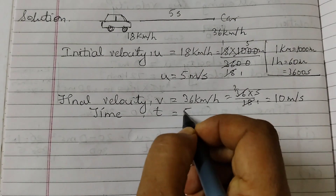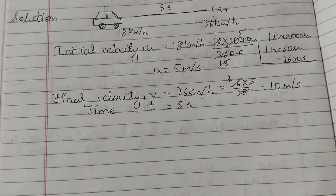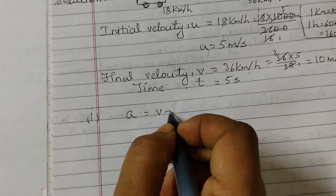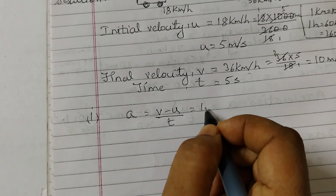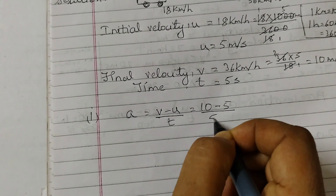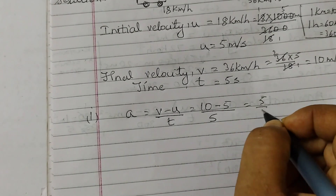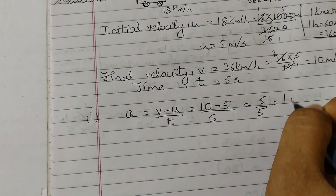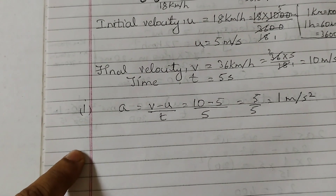Time is already in the standard unit, which is 5 seconds. First we will find the acceleration. The formula for acceleration is a = (v − u) / t. So v is 10, minus u which is 5, divided by t which is 5. That equals 5 divided by 5, which is 1. The unit for acceleration is meters per second squared.